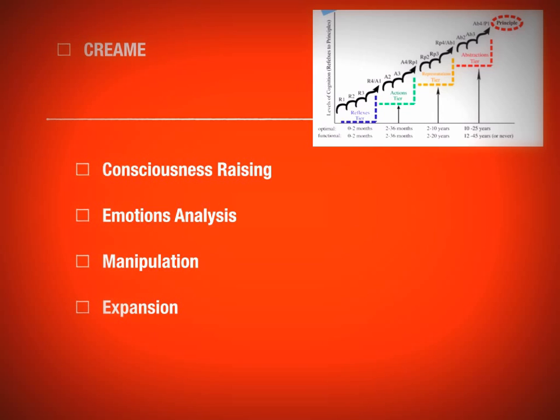Emotions Analysis could also involve having students write a sentence or paragraph about how they feel about the topic — anything that makes them aware of and analyze their emotions. Once they've gone through those two stages, the next part is Manipulation: taking the content and personalizing it, getting it into a new design that fits within their own thinking. It's much easier having already done consciousness raising and emotions analysis first.